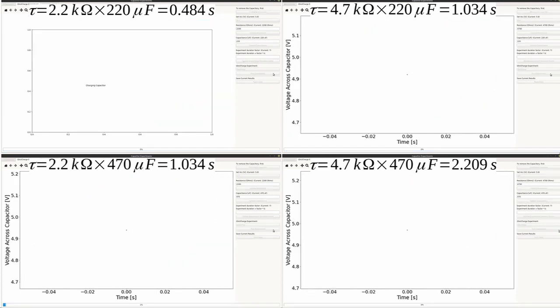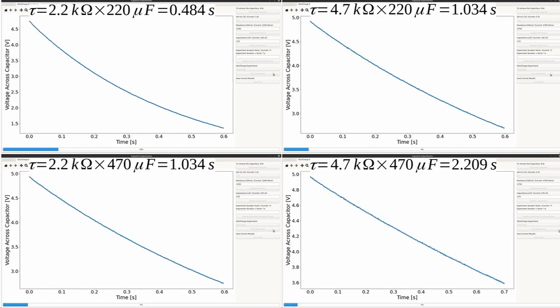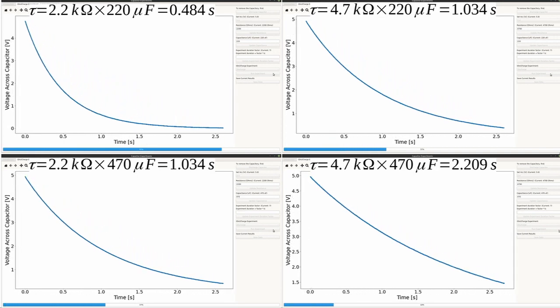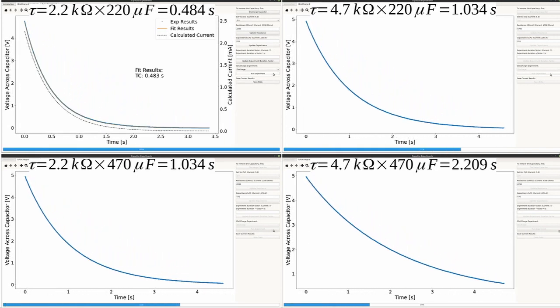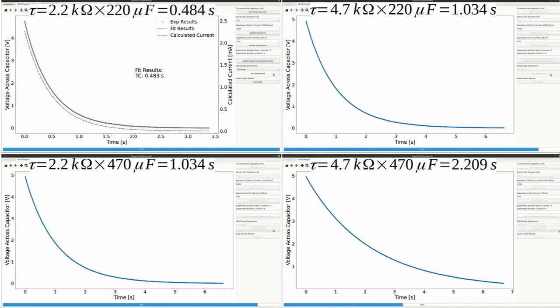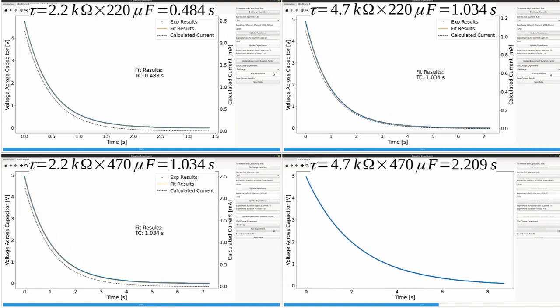This experiment shows the results of the capacitor discharging. In this case, pin 8 is set to low, connecting it directly to ground. The Arduino is now acting as if it's not even in the circuit, but it's as if the resistor is being used to make a direct connection across the capacitor.